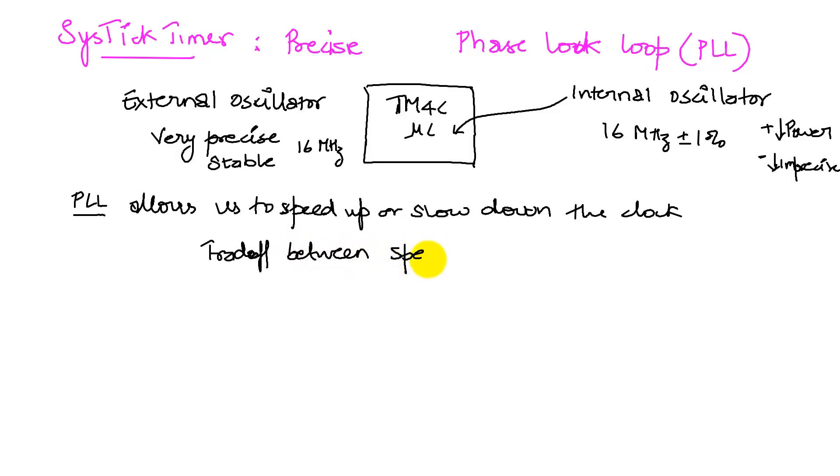Between speed and power. The PLL allows you to choose where you want to lie between this trade-off, between the speed and power. So let's take a look at these two fields that we use to configure the PLL.